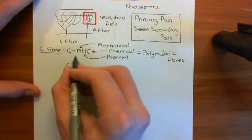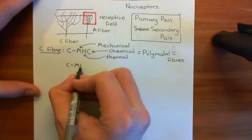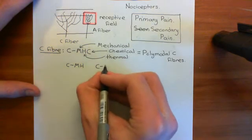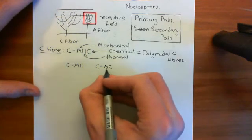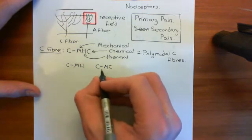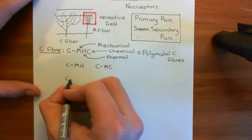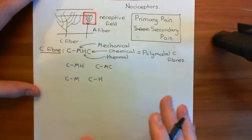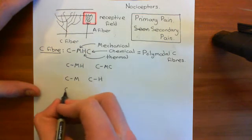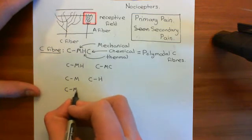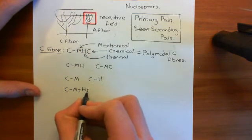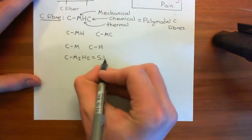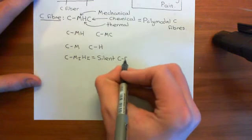Then there are ones almost as broad but not quite. You have C-MH fibres, which respond to mechanical and thermal stimuli but not chemical stimuli. You also have C-MC fibres, which respond to mechanical and chemical stimuli but not thermal stimuli. You then have ones specific to a single stimulus: C-fibres which respond to just mechanical stimuli, and C-fibres which respond to just thermal stimuli. Finally, there is a type known as a C-MIHI fibre, also called a silent C-fibre nociceptor.